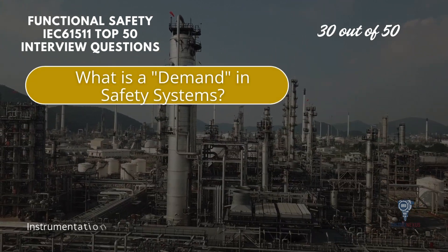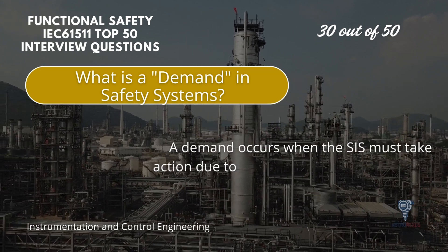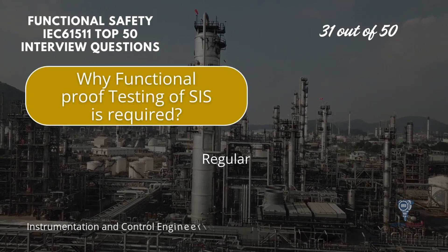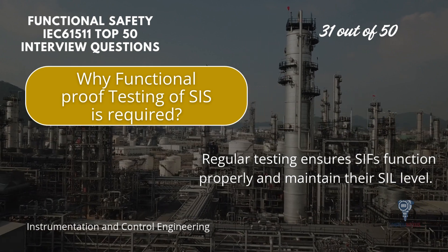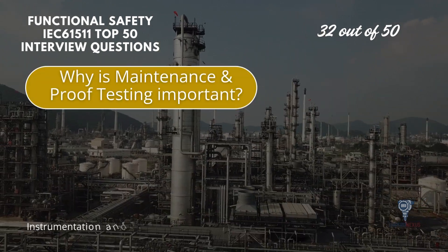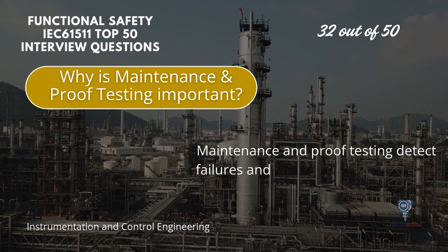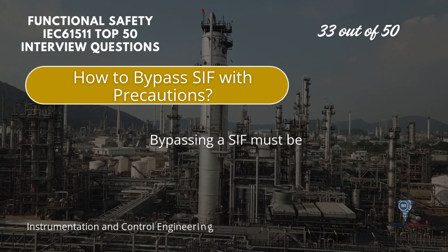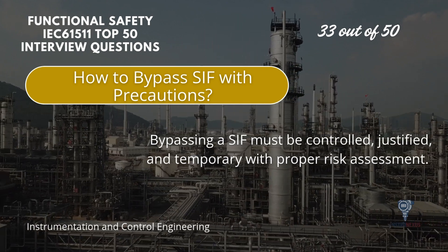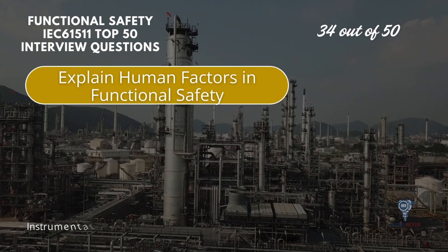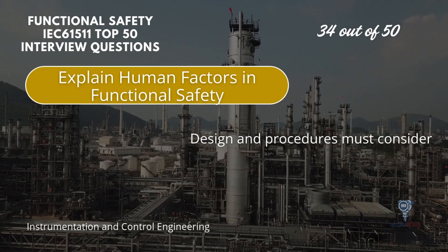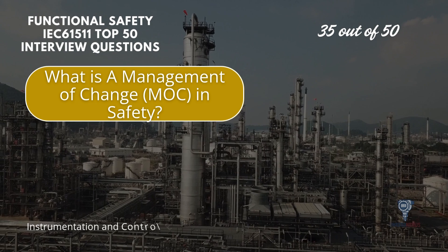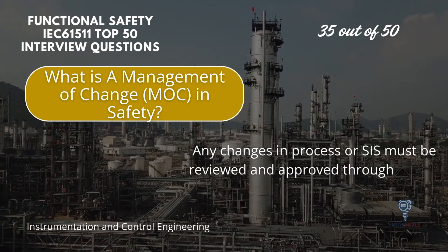A demand occurs when the SIS must take action due to a process deviation or failure. Regular proof testing ensures SIFs function properly and maintain their SIL level. Maintenance and proof testing detect failures and extend system reliability. Bypassing a SIF must be controlled, justified, and temporary with proper risk assessment. Design and procedures must consider human limitations and reduce risk from errors. Any changes in process or SIS must be reviewed and approved through management of change, MOC.